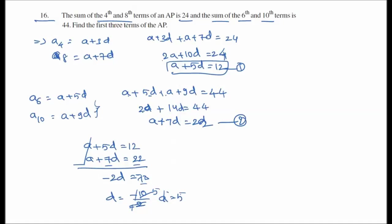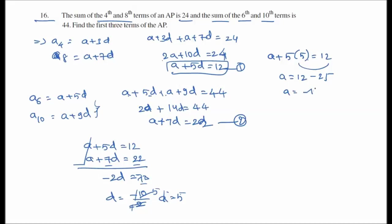Substituting d equals 5 into equation 1: a plus 5 times 5 equals 12, so a plus 25 equals 12, therefore a equals 12 minus 25 equals negative 13.